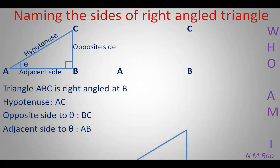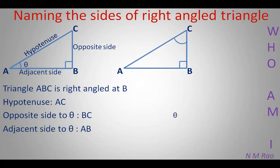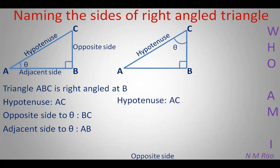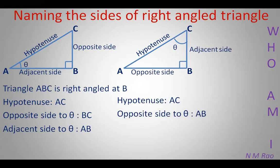Now what happens if theta is taken at the position of angle C instead of angle A? Can you name the sides of the right angle triangle? They are not the same as discussed earlier, because we are taking the angle at a different position. The hypotenuse remains the same, but the side opposite to theta is now AB. The opposite side to theta is AB, and the adjacent side to theta is now BC.